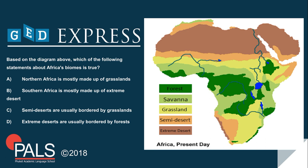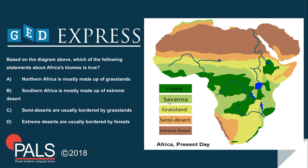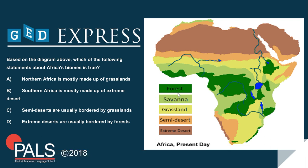We can tell this by using the key in the bottom left corner to decipher the information given to us on the map. The key tells us what the colors on the map represent, and we can use that information to determine which answer choice is correct. Seeing that grasslands are a light yellow-green and semi-deserts are light brown, we can determine that answer choice C is true, while none of the other answers are actually supported.